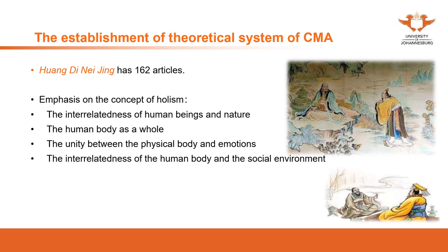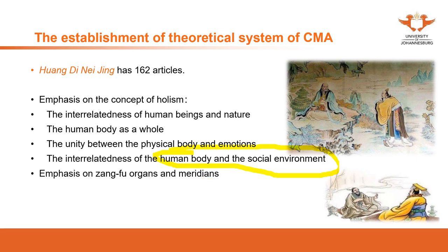The relationship between the human body and the social environment is also addressed. The social environment — including one's social status — can also affect emotion. The zangfu organs and meridian system have been detailed and discussed in the Huangdi Neijing. Our basic theory is actually based on the discussions of the Huangdi Neijing.